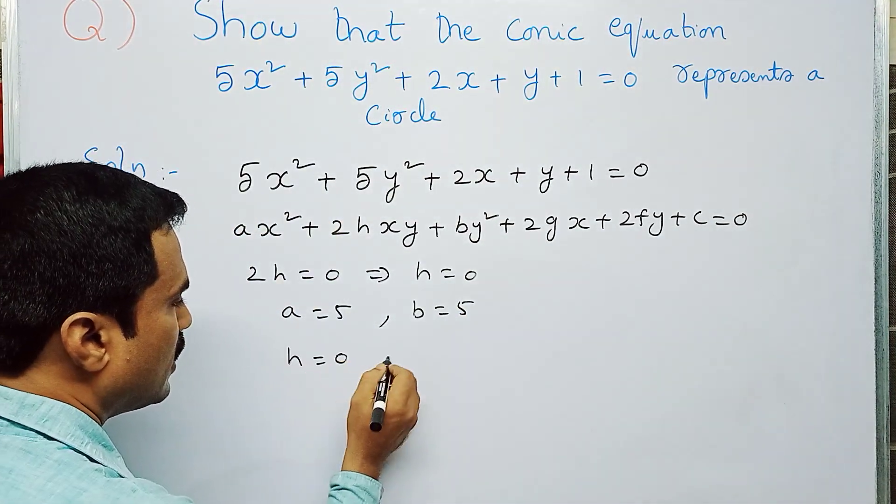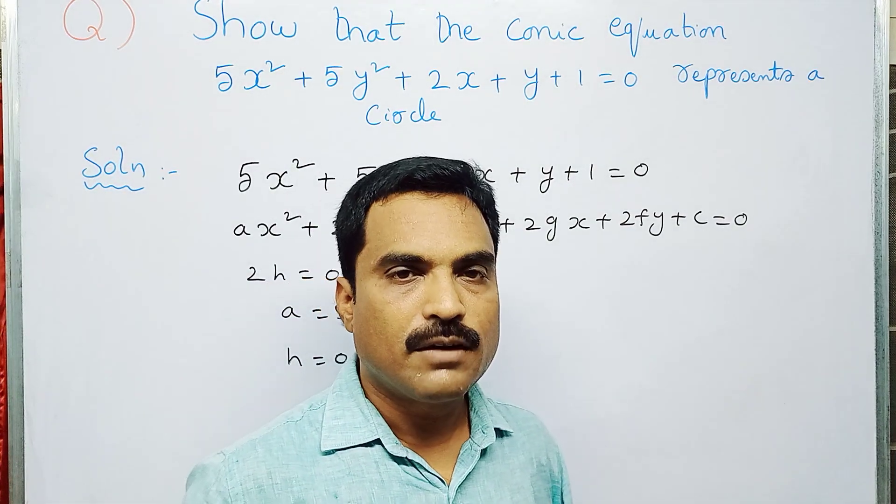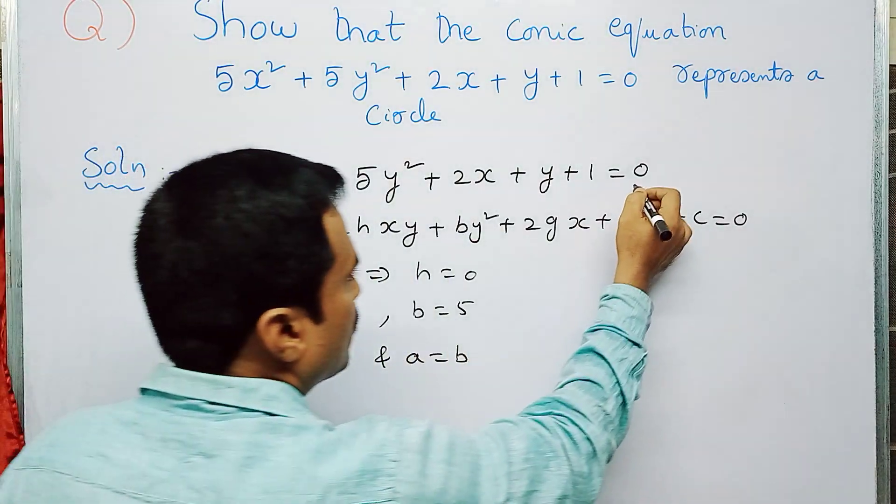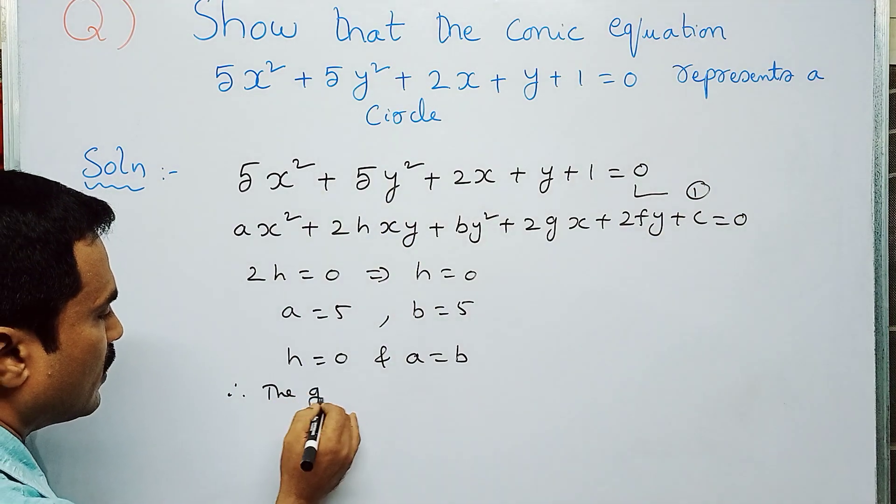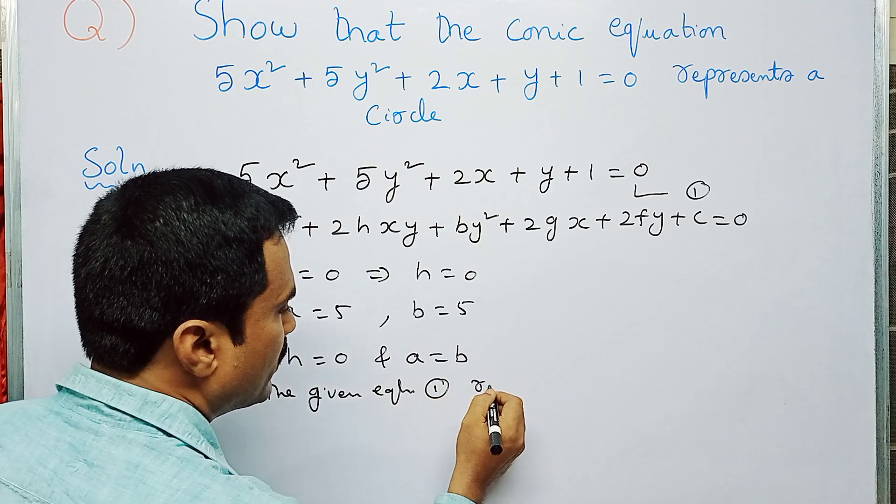So therefore, the given equation of a conic represents a circle. The given equation 1 represents a circle.